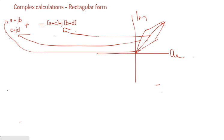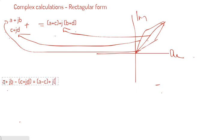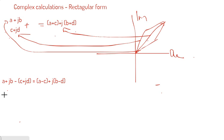Now suppose you need to subtract: (a plus j b) minus (c plus j d). The resultant will be — first you subtract the real parts a and c, then subtract the imaginary parts b and d. So you will get it as (a minus c) plus j into (b minus d).